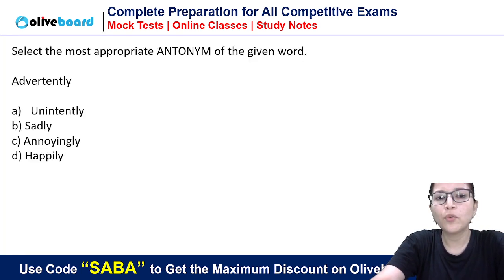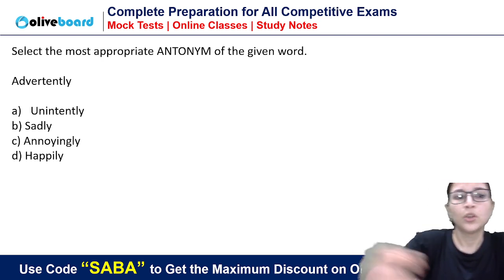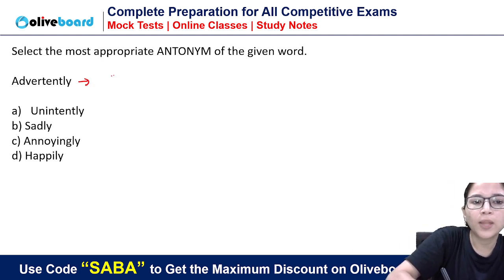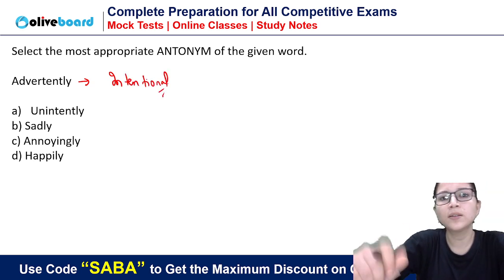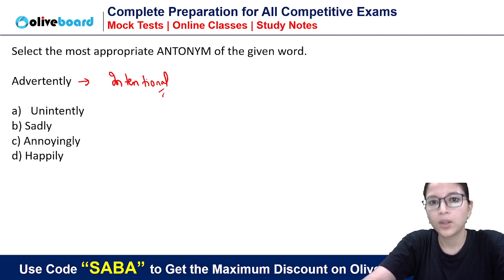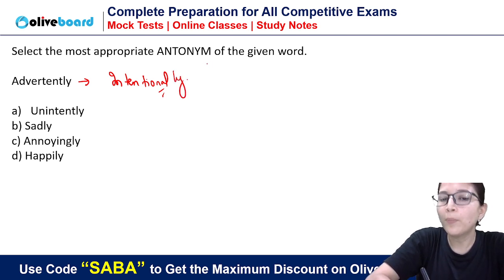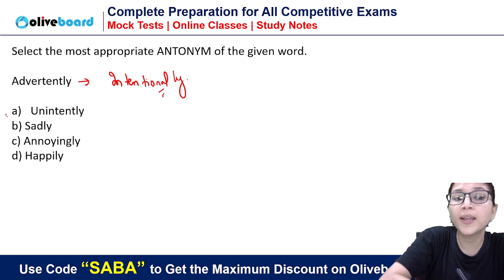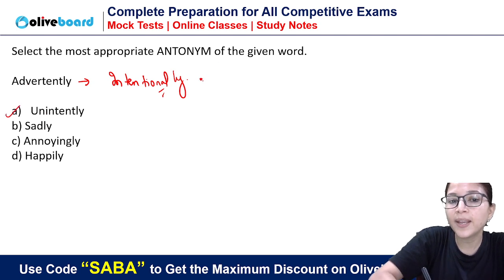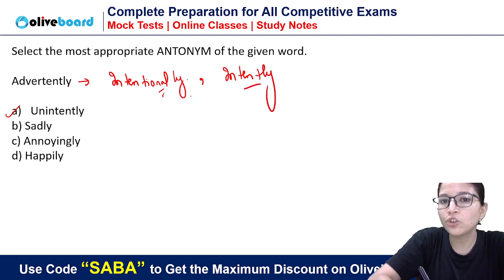The first question is: What is the antonym of the word 'advertently'? The word 'advertent' means intentional — intentionally. So if you ask the opposite, what will happen? Unintendedly. Because 'intent' and 'intentional' mean the same. So 'intently' and 'intentionally' mean the same — purposely. You have to know this.